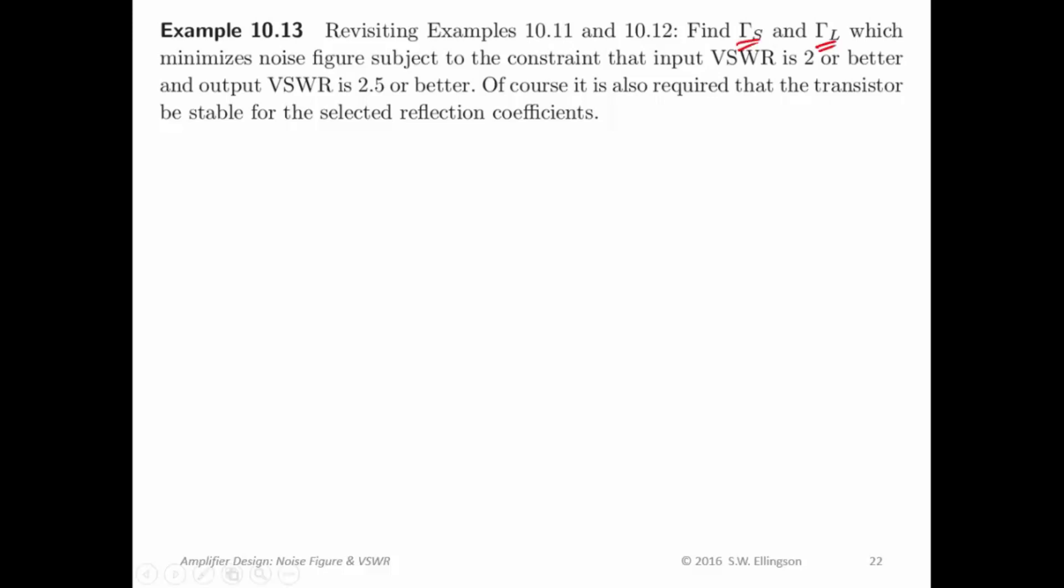Find gamma sub s and gamma sub L. In other words, find the design which minimizes noise figure subject to the constraint that the VSWR is 2 or better at the input and 2.5 or better at the output. This is a pretty typical set of VSWR requirements to have.